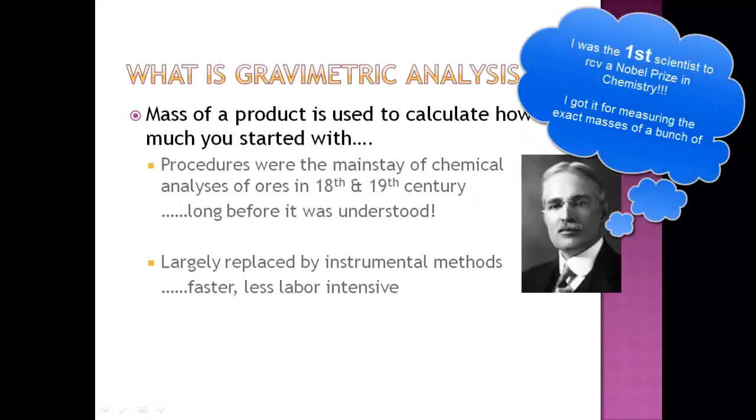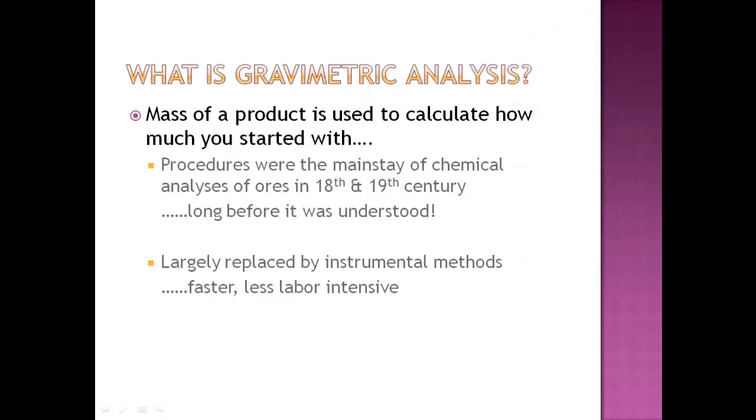Back in the 1900s, T.W. Richards actually got the Nobel Prize because he measured the atomic mass of silver, chlorine and nitrogen using gravimetric analysis. These procedures were the hot topic back in the 18th and 19th century, even before it was long understood. They knew that what they were getting was correct but they really didn't know how it was working at the time, which is kind of interesting.